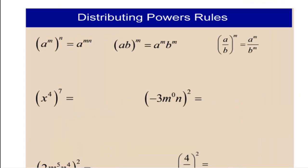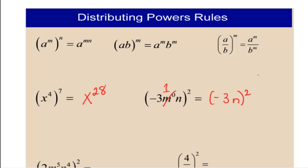Next, let's work with raising a power to a power and distributing a power throughout parentheses. The first example is x to the fourth raised to the seventh — we multiply those together to get x to the 28th. Then we have negative 3m to the 0 times n to the second. Well, n to the 0 is the same as 1, so this is ultimately negative 3n to the second. We're going to distribute the exponent, so we get negative 3 squared — keep that in parentheses, that's very important — times n squared, which is 9n squared.